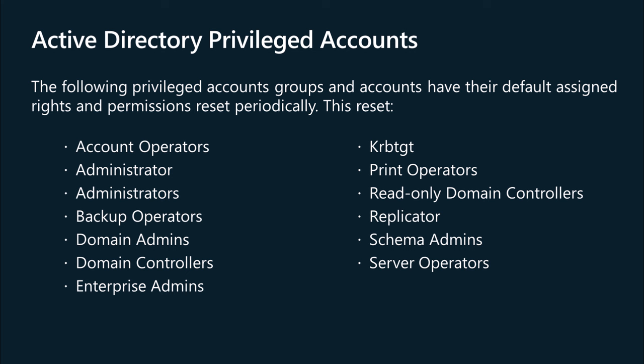Active Directory contains a default set of highly privileged accounts and groups that are protected by special processes. These processes ensure that if somebody manually changes a protected object's permissions, those permissions are returned to their defaults quickly. In this video, you'll learn about which accounts and groups are protected in Active Directory in this manner, and how you can trigger the process to revert permissions manually rather than waiting for the next refresh to occur. The following privileged groups and accounts have their default assigned rights and permissions reset periodically.